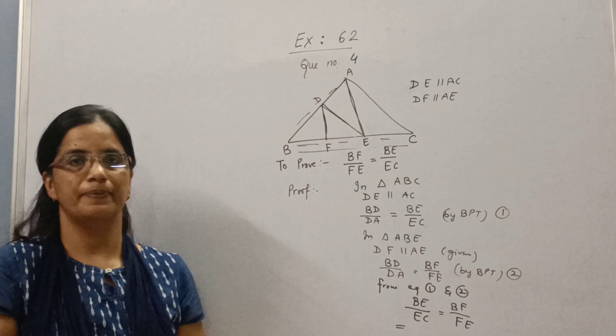Now you can see in equation 1 and equation 2, the left-hand side is equal. So the right-hand side is also equal. From equation 1 and 2, we can write BE upon EC is equal to BF upon FE. And this is exactly what we wanted to prove. So this is question number 4.